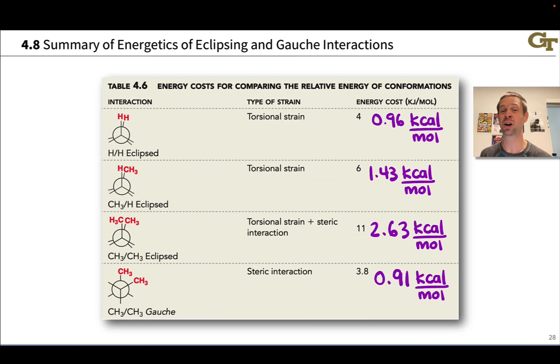Is it enough to make the gauche conformer pretty much non-existent relative to the anti conformer? Or is there a significant amount of gauche conformer around?